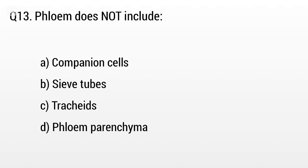Question 13. Phloem does not include: Option A: Companion cell, B: Sieve tube, C: Trachea, D: Phloem parenchyma. The right answer is option C, Trachea.